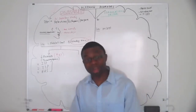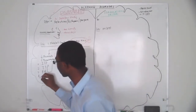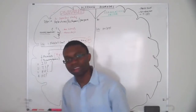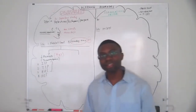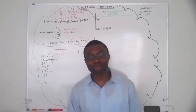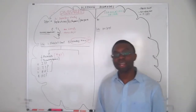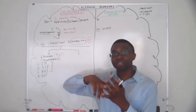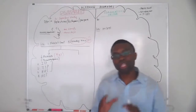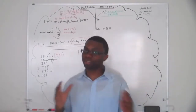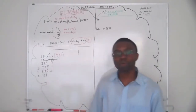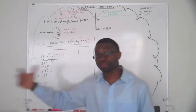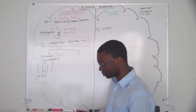Another thing that can cause low platelets is HIT — heparin-induced thrombocytopenia. This is basically the body making antibodies against platelets and heparin, which consumes your platelets. Remember those four things — ITP, TTP, HUS, and HIT.